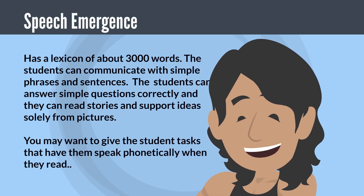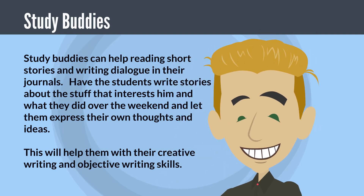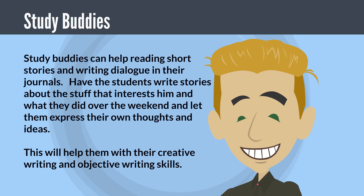Speech emergence has a lexicon of about 3,000 words. Students can communicate with simple phrases and sentences, answer simple questions correctly, and read stories supported by pictures. You may want to give the student tasks that have them speak phonetically when they read. Study buddies can help with reading short stories and writing dialogue in journals. Have the students write stories about topics that interest them — what they did over the weekend — and let them express their own thoughts and ideas. This will help with creative and objective writing.